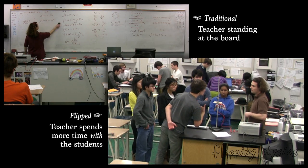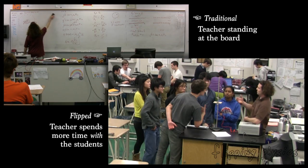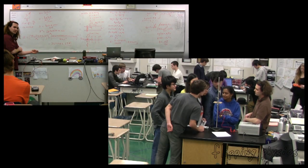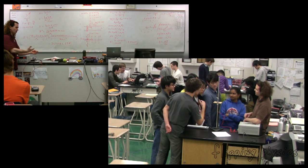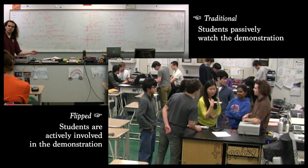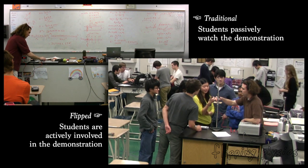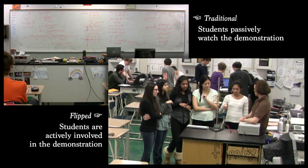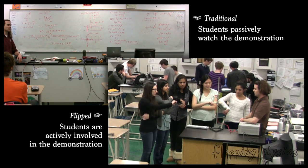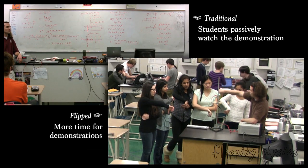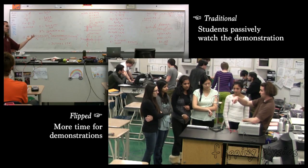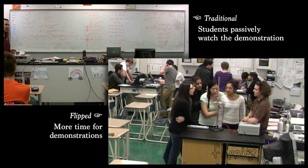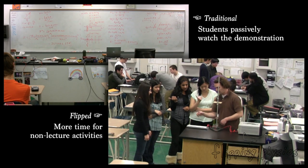One thing you may not have noticed in the traditional lecture was that there was a demonstration. There is a major difference in the way demonstrations can be done in a flipped class. The students have already seen the demonstration at home, and in class they get an opportunity to see it up close. They can touch the demo and ask questions about it in a small group setting, which is a lot more comfortable. We also had time to do a second demonstration in the flipped class that only sometimes in the traditional class we had time to do — because the flipped class allows more time for things other than lecture.